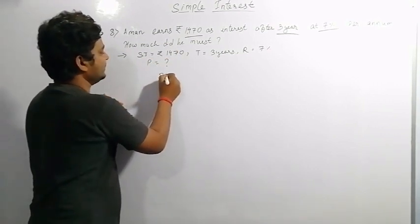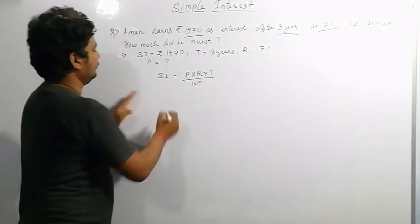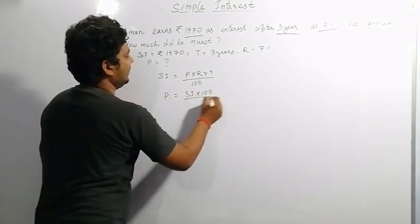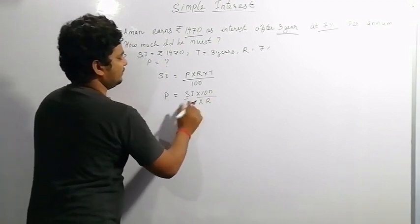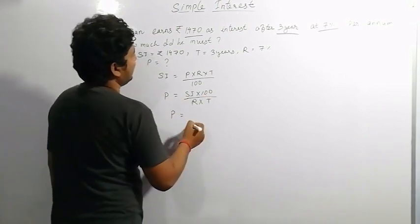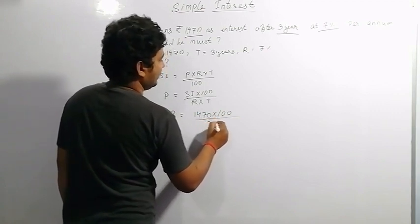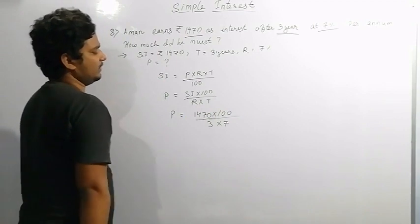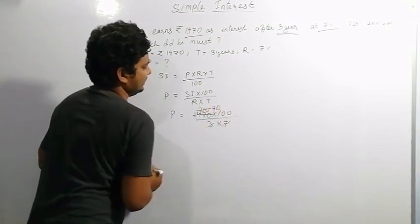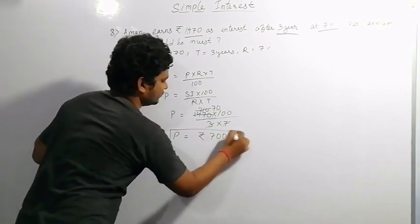Using the formula, principal equals SI into 100 divided by rate into time. Putting values: 1,470 into 100 divided by 7 into 3. Dividing by 7 gives 210 into 100 divided by 3, which gives 70 into 100. Therefore principal equals rupees 7,000. This is the solution for this question.